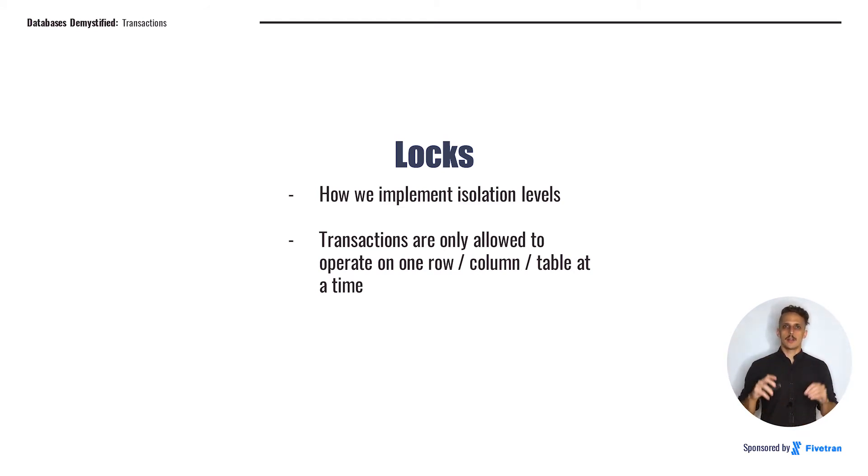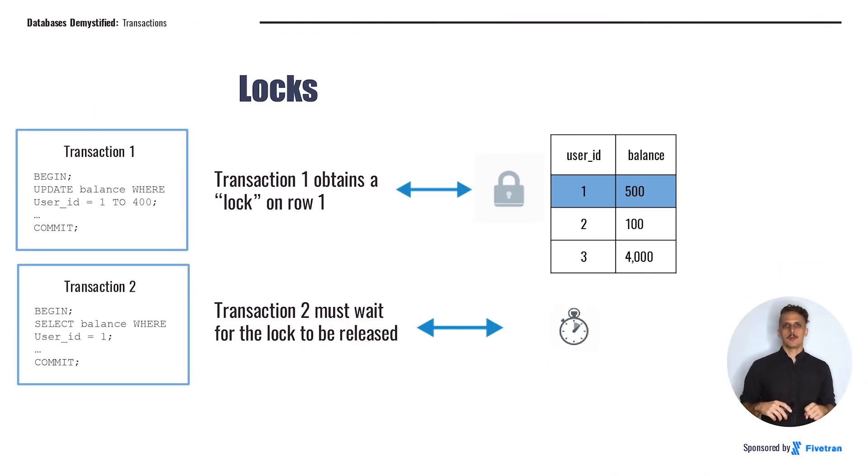That is, if two transactions want to operate on the same data at the same time, the database will place a lock on the data when the first transaction starts so that any other transactions can't operate on that data until the lock is released. Other transactions have to wait their turn in order to access those data. Different isolation levels will have different locking strategies.